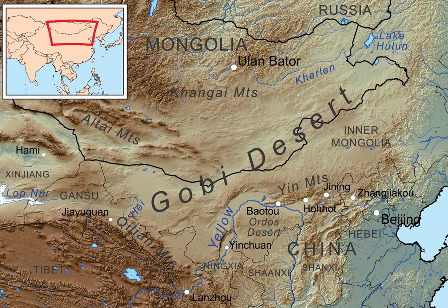Additional moisture reaches parts of the Gobi in winter as snow is blown by the wind from the Siberian steppes. These winds may cause the Gobi to reach minus 40 degrees Celsius in winter to 45 degrees Celsius in summer. The climate of the Gobi is one of great extremes, combined with rapid changes of temperature of as much as 35 degrees Celsius.